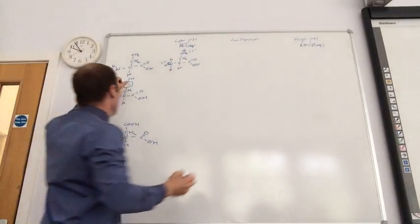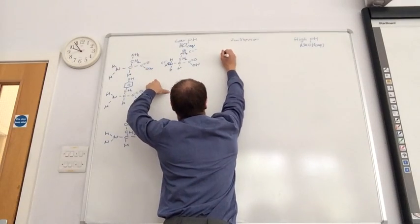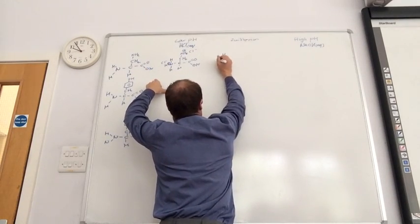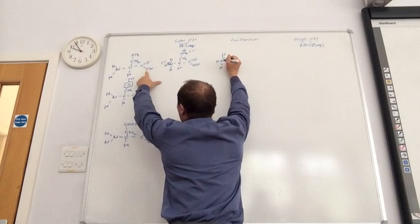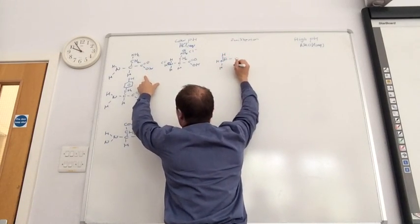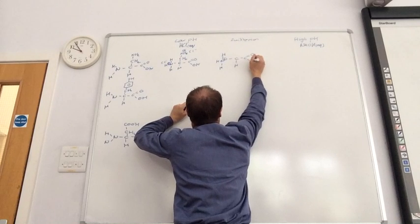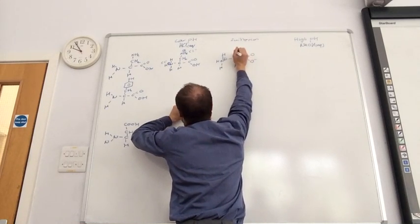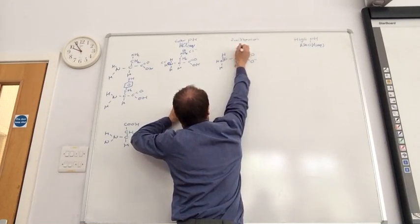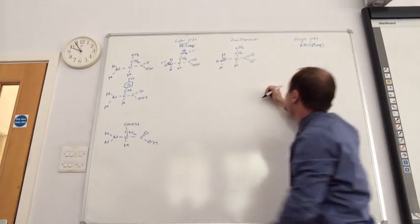The zwitterion, you ignore the side chain and you just draw it as the hydrogen being transferred from this one to the one on the same carbon. Ignore the side chain going off. So that remains NH2.